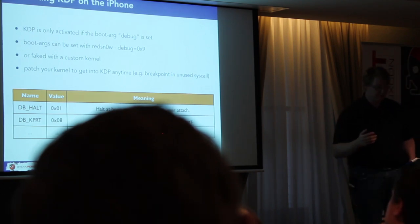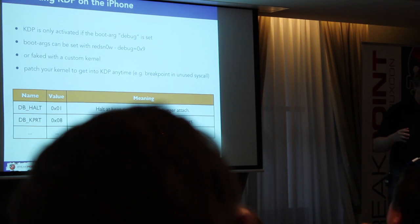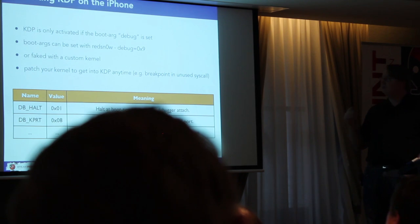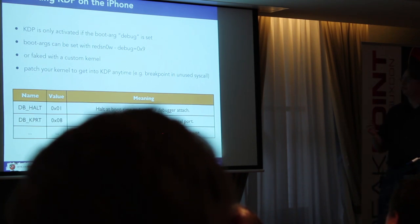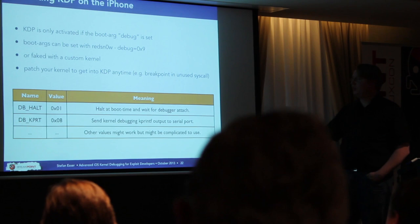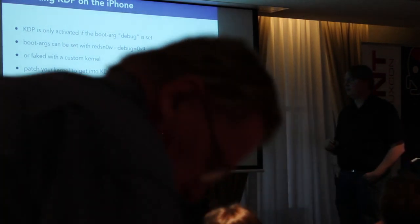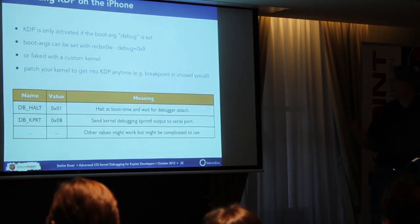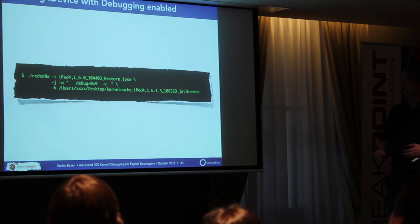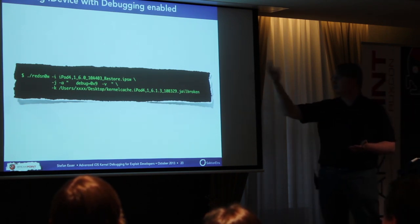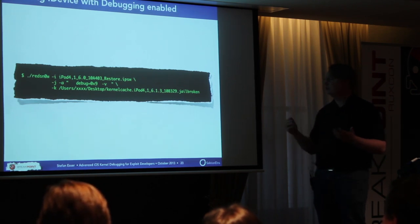For iOS 7 only the iPhone 4 still works with the bootrom exploit. For older devices you use the bootrom exploit LimeRain with RedSn0w or OpenSn0w and pass boot arguments like `debug=0x9`. The first bit tells the kernel to halt at boot time; the second bit enables debug messages over the serial port. You call RedSn0w with an IPSW file, the boot arguments, and a jailbroken kernel.